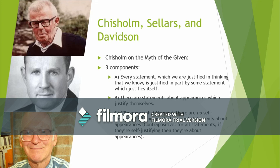And then you have C, which is the version that Chisholm goes to some length to deny — the phenomenalist version of the given — which is: there are no self-justifying statements which are not statements about appearances. This is a universal claim as opposed to an existential claim. The contrapositive: for all self-justifying statements, if they're self-justifying, then they're about appearances. So B says there's at least one that's about appearances; C says they're all about appearances.